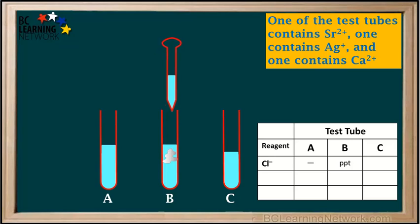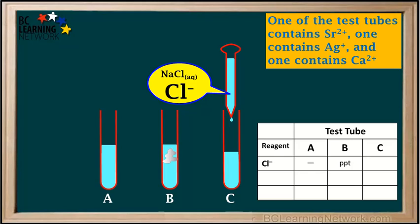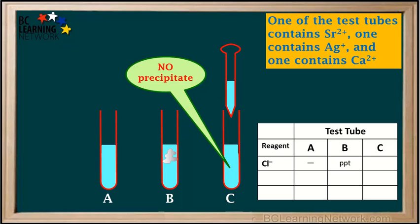We'll take the pipette out of test tube B, refill it, and bring it over to test tube C. We'll add the chloride solution to test tube C. This time we didn't form any precipitate, so we'll write a dash in the table for chloride in test tube C.